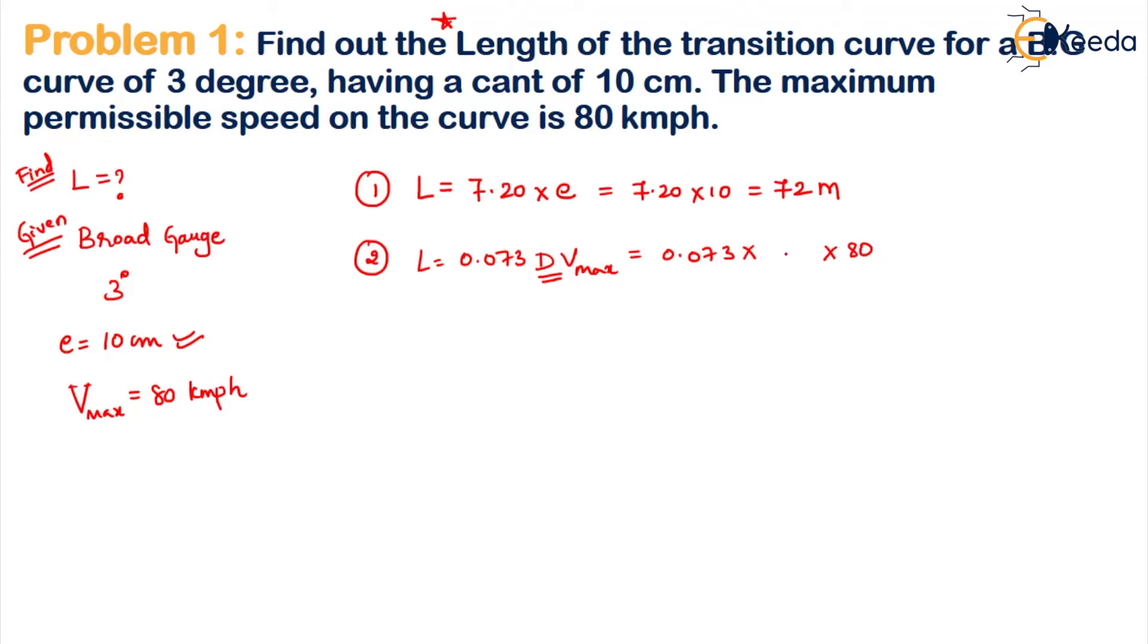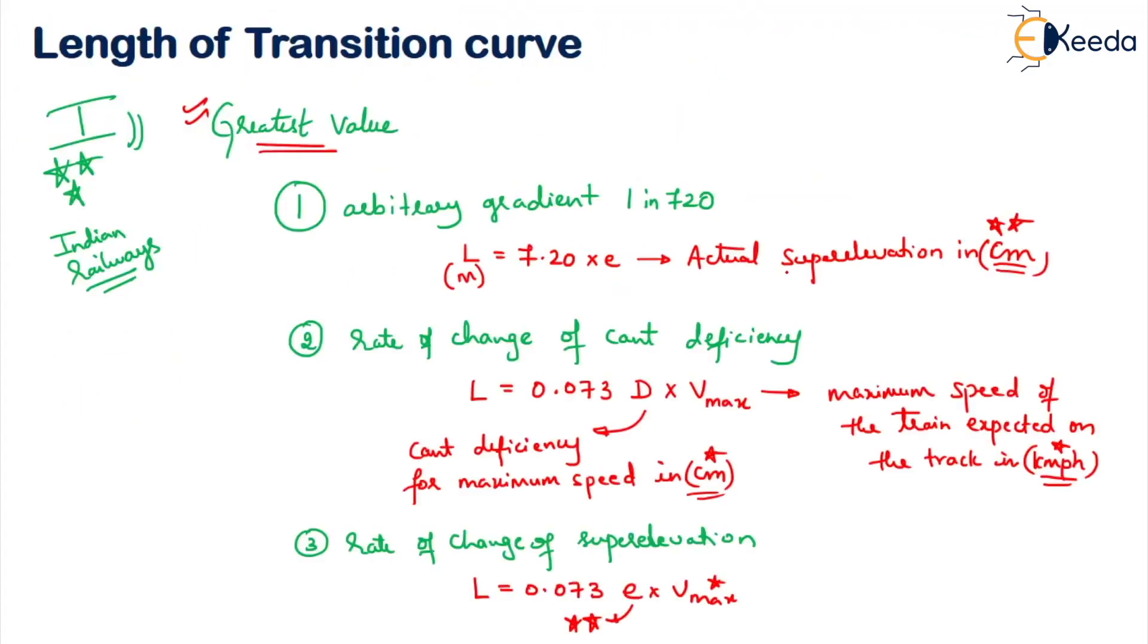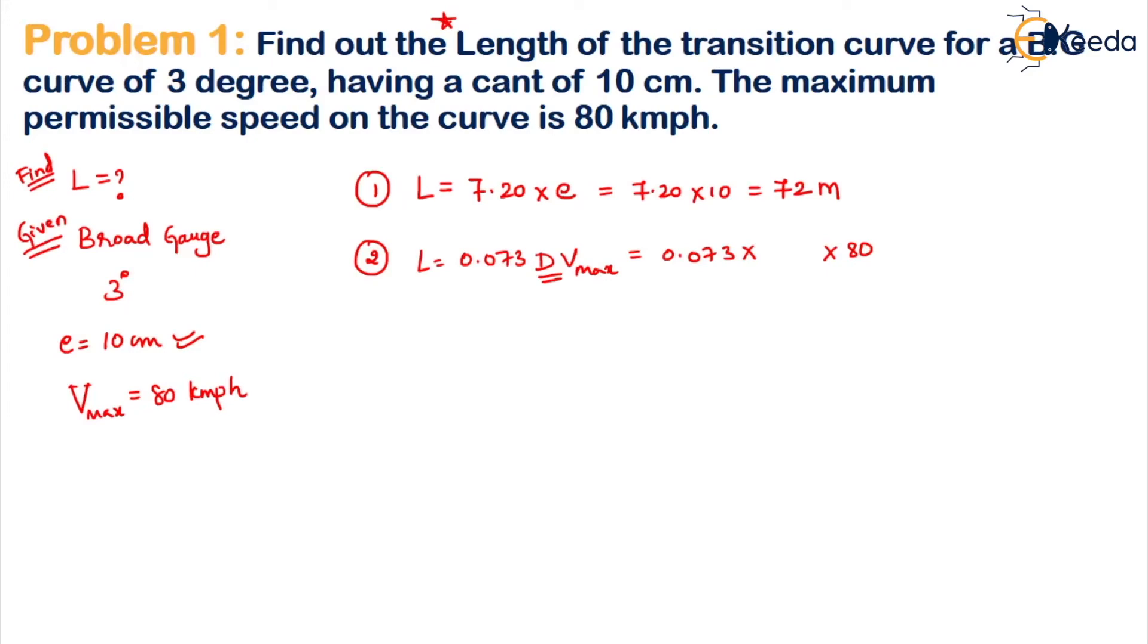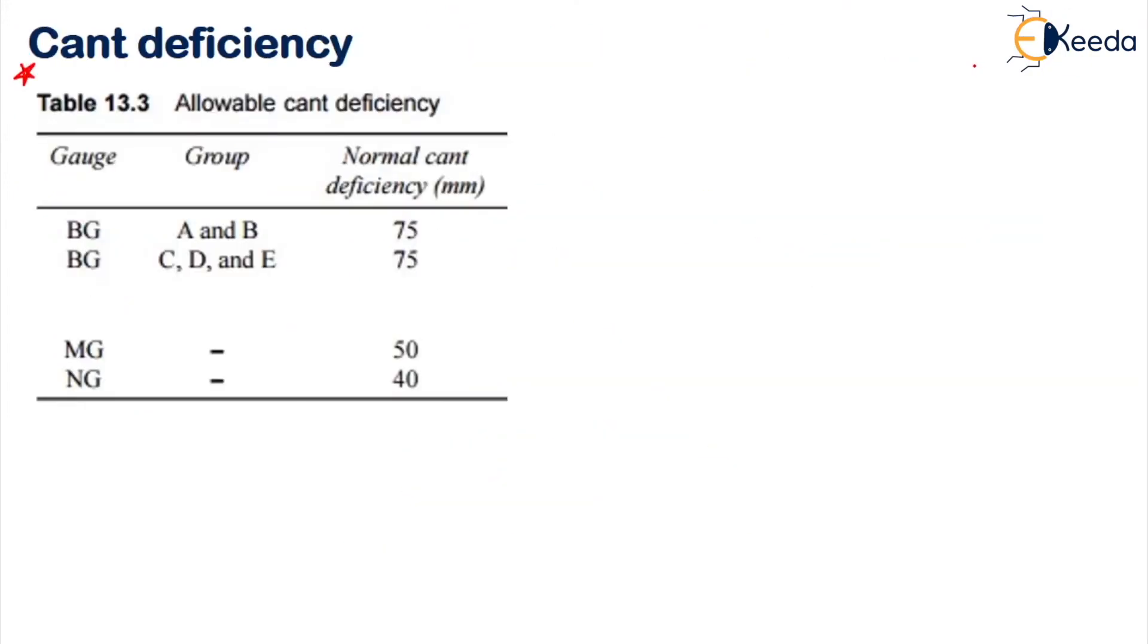For this we have a standard table from the chapter on cant deficiency. In the question, broad gauge is given, and the maximum speed is 80 kmph. All these values are for speeds less than 100 kmph, so 80 falls in this category. For broad gauge at 80 kmph, the standard cant deficiency value is 7.6 centimeters.